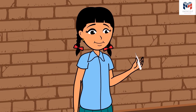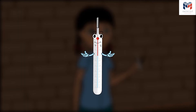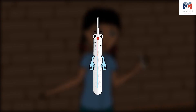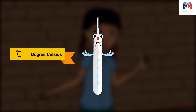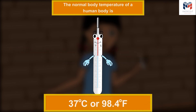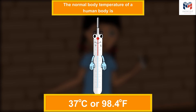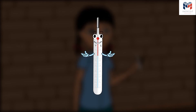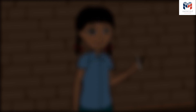Rama asks: What does the C and F written on you mean? The thermometer replies: Which unit do you use to measure height? Rama answers: Centimeter, meter, etc. Correct! Likewise, to measure temperature we use degree Celsius and degree Fahrenheit. The normal body temperature of a human body is 37 degrees Celsius or 98.4 degrees Fahrenheit. Now wash me with water and place me back in my cover, or else mother will get angry!